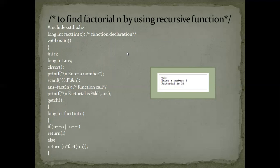So that is factorial — how we are going to calculate it. This is a header file. We have long int fact(int x). Here, fact is the function name and long int is the return type. We have seen the data types — in integer there are three classifications: normal int, short int, and long int. Here int x is the parameter passed to the function. This is what we call a function declaration, declared before the main function.